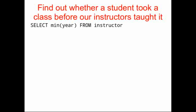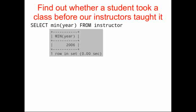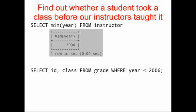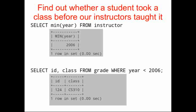We're going to start by identifying the minimum of the year values from the instructor table — the first year that classes are listed. The minimum year is 2006. We're going to select ID and class from grade where year is less than 2006. This will tell us which students took which classes before 2006, before any of our instructors taught these classes. Student 124 took class CS310 before 2006.